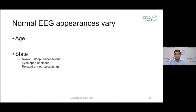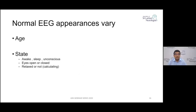Normal EEG appearance varies based on the age of the patient, which is why age is essential for EEG interpretation. The state of the patient also matters — whether awake, asleep, or unconscious, and whether eyes are open or closed. Normally eyes are kept closed during recording; halfway through, the patient opens eyes for about 10 seconds to show reactivity. When eyes are closed, posterior activity becomes prominent and well-organized; when eyes are open, it attenuates. This is called the reactivity of the posterior background to eye opening.